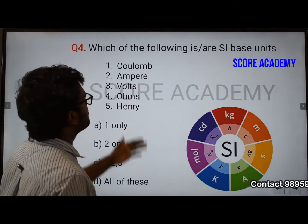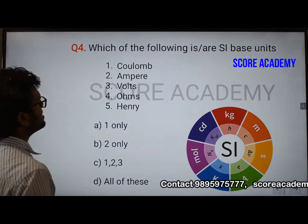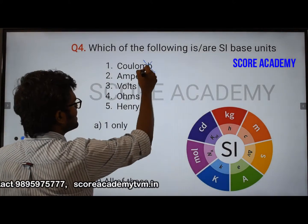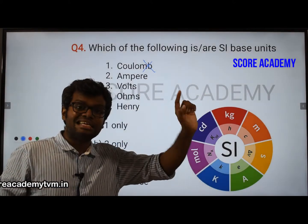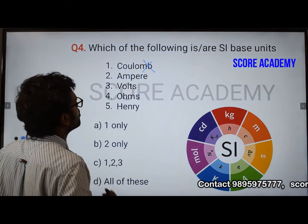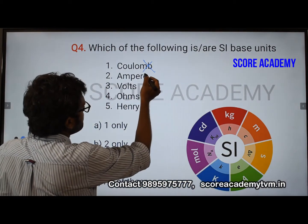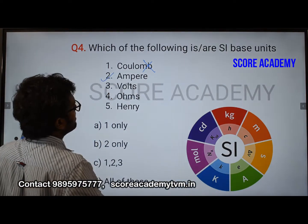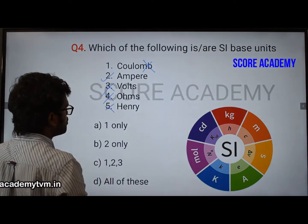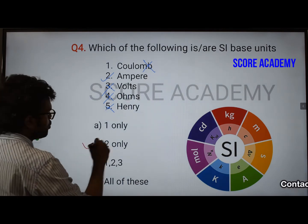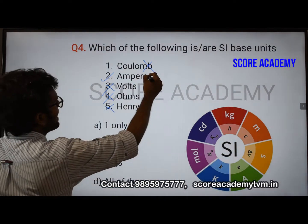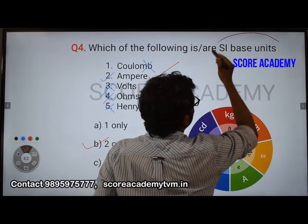Here is another replica question: which of the following are base units? A base unit is defined independently. Looking at the options — ampere is a SI base unit. Voltage in ohms is derived. So the answer is: ampere is the SI base unit.